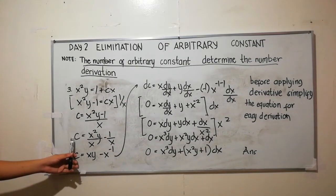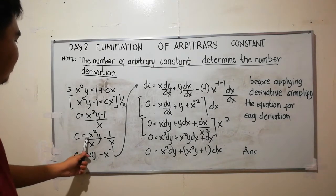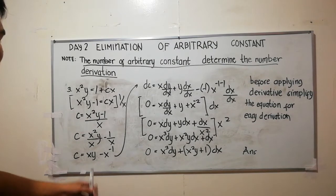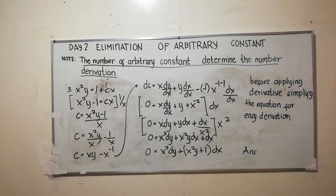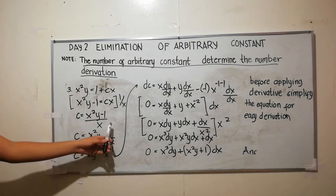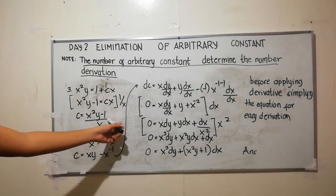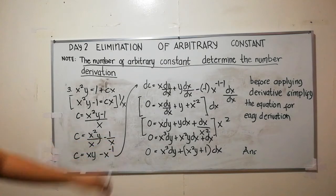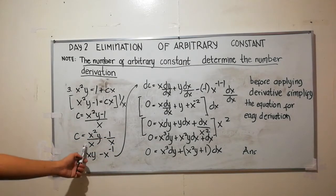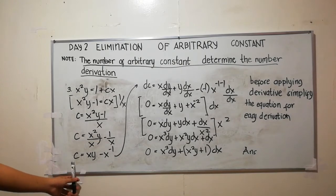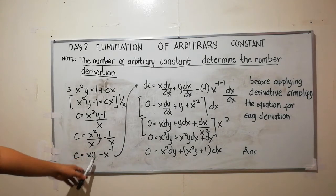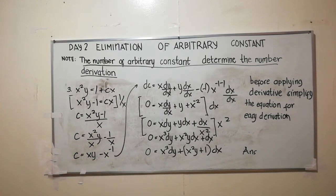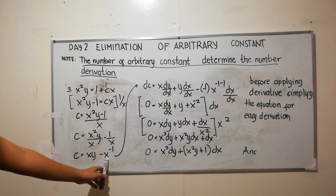The resulting equation is c is equal to x squared y over x minus 1 over x. Using the rule of fractions, the simplified result is c is equal to xy minus x raised to negative 1, since x squared over x simplifies to x.